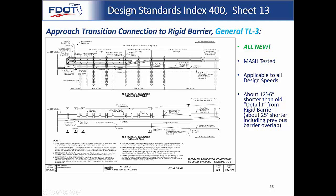The latest crash-tested connection basically just overlaps the length of the Thribeam terminal connector — that's it. We're emulating the way these transitions are crash tested. This also has a new raised alignment curb with a vertical face curb that lines up with the end of the barrier. The idea behind that is to prevent wheel snagging, which we'll discuss further in a moment.